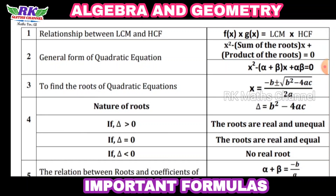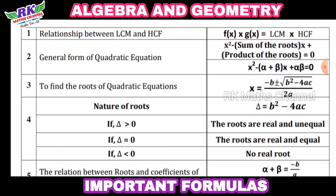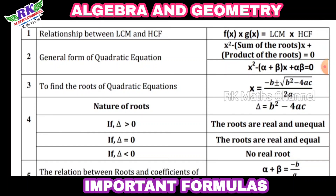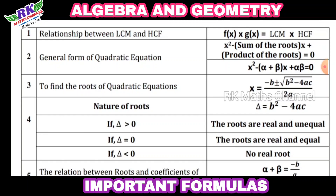Next, we find the roots of a quadratic equation. To find the roots, we can use the factorization method or apply the formula: x = (−b ± √(b² − 4ac)) / 2a, where A, B, and C are coefficients we substitute into the equation.